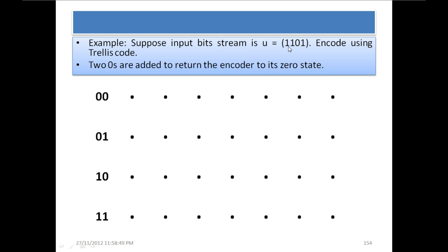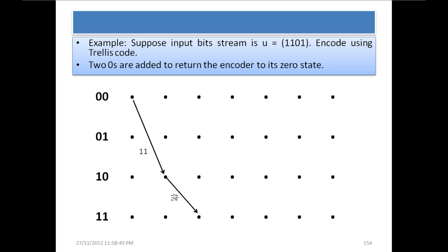The total input will become 1 1 0 1 0 0. We know that at the initial stage the registers are always 00, so it always starts from 00. From 00, if the input is 1, then from the trellis diagram we know that the next state will be 10 and the output will be 11. When we are at 10 and the next input bit is 1, from the trellis diagram we can see that if we are at 10 and the next input bit is 1, then the next state is 11 and the output will be 10.